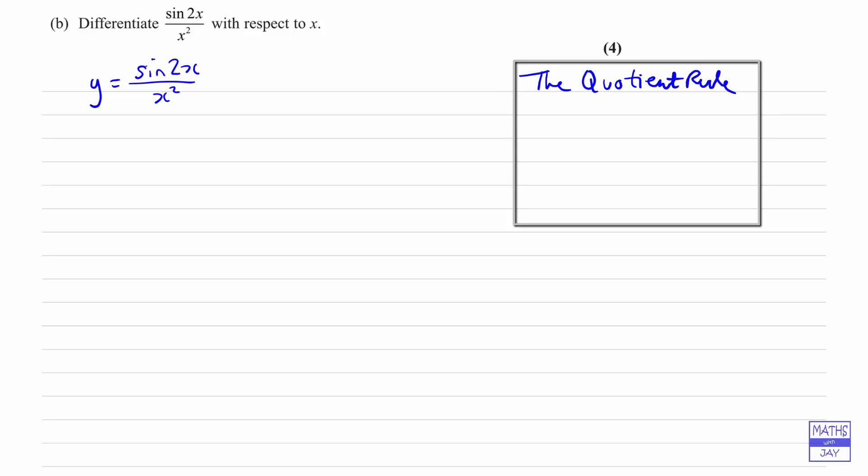I like to write this out in terms of u and v so that our function in the numerator will be u and the denominator will be v. It's really important here that our u is sin 2x and v is x squared for the example we're looking at. Let's write down the general rule.